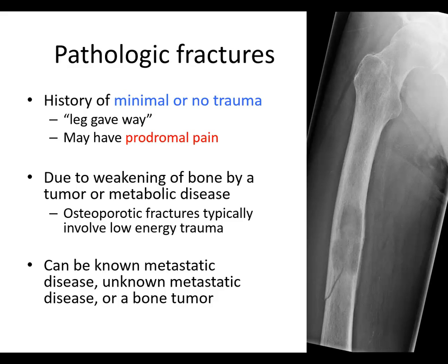It's important to pick up on that history. Pathologic fractures are due to weakening of the bone by a tumor or metabolic disease. Osteoporosis is certainly more in the metabolic disease category — those typically do involve some trauma. Whereas somebody with a big lytic lesion probably has no trauma, an osteoporotic fracture will occur with some trauma, but usually not severe trauma. A young healthy patient would need a car crash to break their hip, whereas an elderly person can fall out of their chair and break their hip. It's a spectrum of how much trauma it takes.